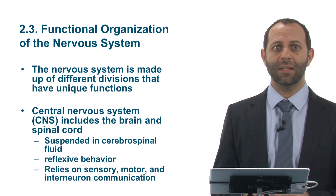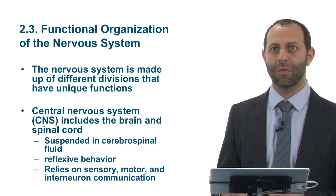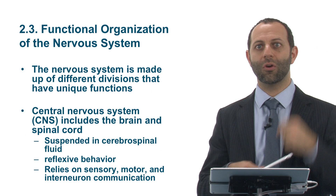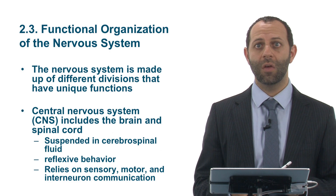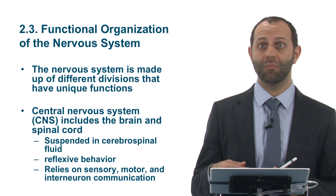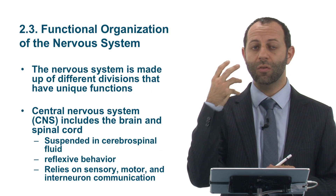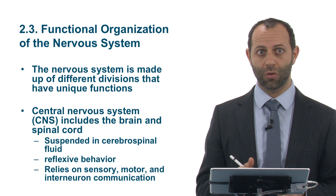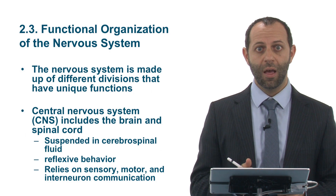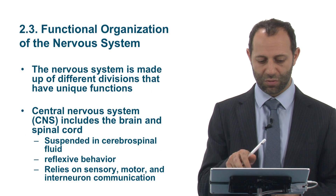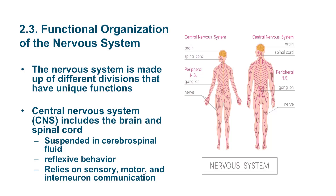The CNS controls reflexive behavior — such as when you go to the doctor and your knee jerks out, or something blows in your eye and you blink. These reflexes are controlled by the central nervous system and involve the sensory, motor, and interneuron systems.